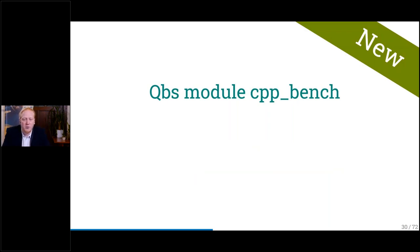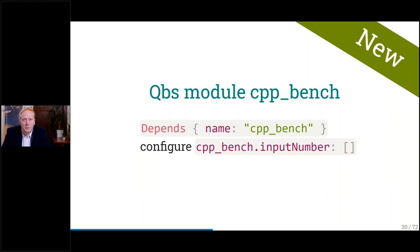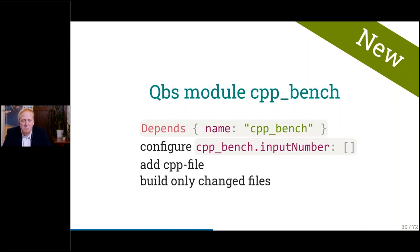I created a new CPPBench module for Cobs. Cobs is like CMake — a build system, but it doesn't create make files, it builds directly. I have a lot of experience with Cobs. The interface is kind of simple: you just depend on CPPBench, configure it — for example, set input numbers like how many types you want to compare — and add a CPP file like a normal C++ file. The best part is we only compile the files that are changed, so if I change one solution, all the other solutions are kept and only the changed files are recompiled.